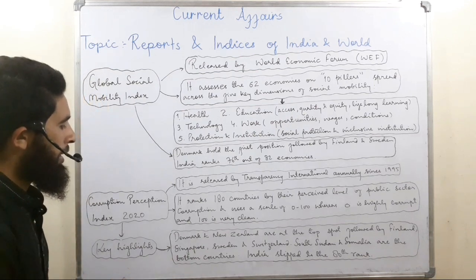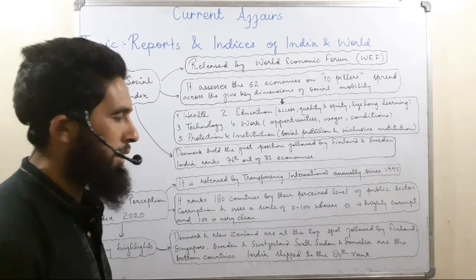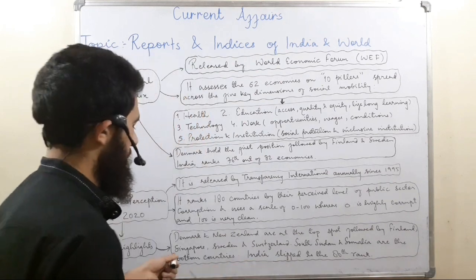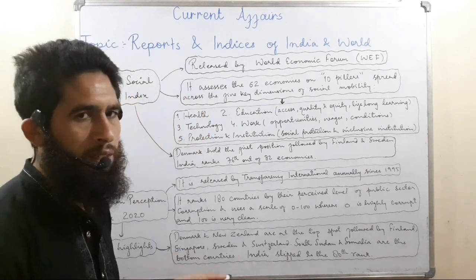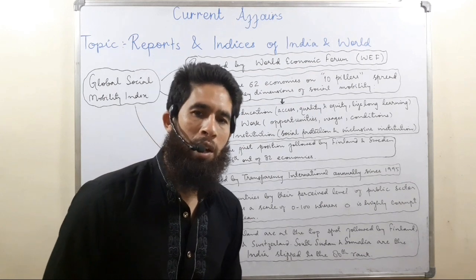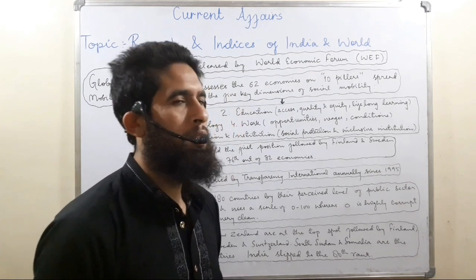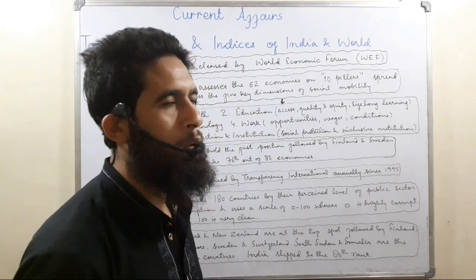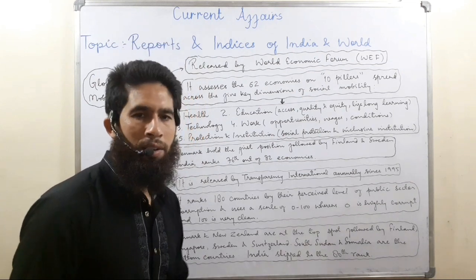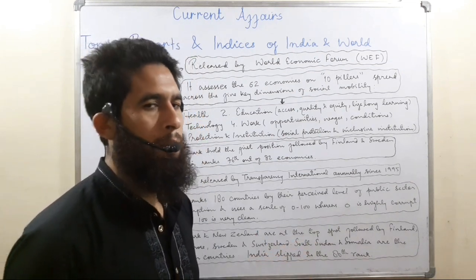Top-ranked countries include Denmark, New Zealand, Finland, Singapore, and Sweden. At the bottom are South Sudan and Somalia. India holds the 80th rank.